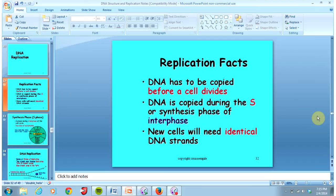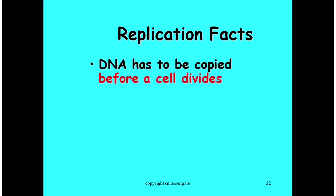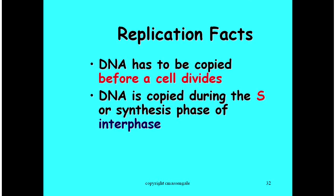You're on your Unit 6 Notes Packet 2, and the first question, number 32, asks why cells have to copy their DNA. Cells have to copy their DNA before they divide through mitosis so that each daughter cell has a full copy. The DNA gets copied during the S — synthesis — phase of interphase, the normal life of the cell.